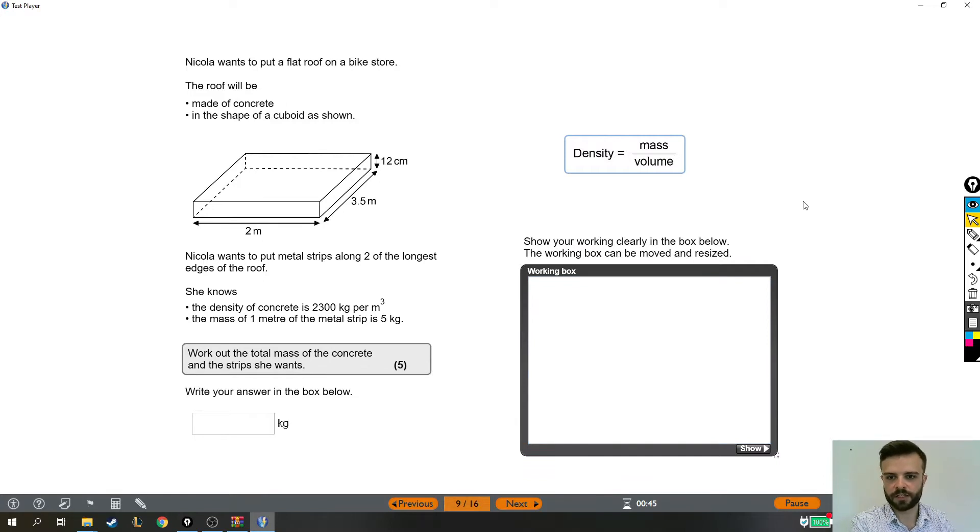Alright, so this next question we're going to look at is complicated. I think this is a really tough one, but there are definitely parts of it that are very doable. The tough part comes right at the end. Let's give it a read-through. Nicola wants to put a flat roof on a bike store. The roof will be made of concrete and in the shape of a cuboid as shown.